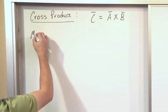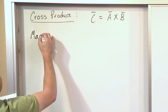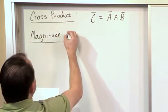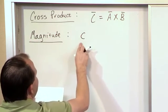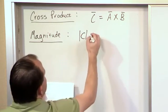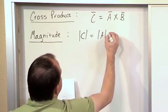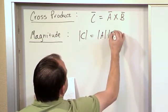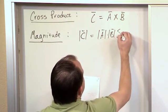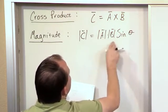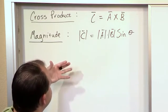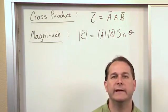Now the magnitude of this cross product, or the magnitude of the result here, is something that we can use occasionally. The magnitude of the vector C is equal to the magnitude of A times the magnitude of B times the sine of the angle between these guys here.